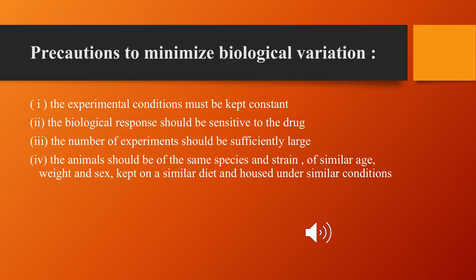Precautions to minimize biological variation: all experimental conditions should be kept constant. The biological tissue used for the experiment should be sensitive to the particular drug. The number of experiments should be sufficiently large to obtain a proper response. The animals used should be of the same species, strain, similar age, weight, and sex. The diet given to the animals and their housing conditions should also be similar for all animals.